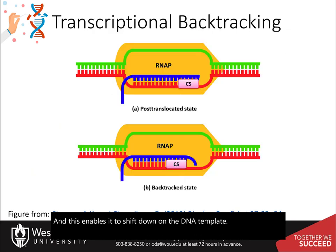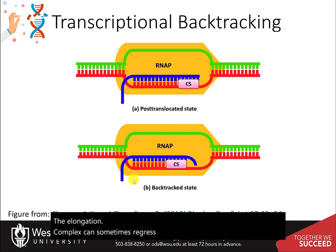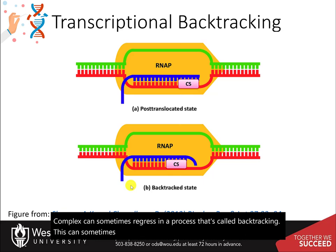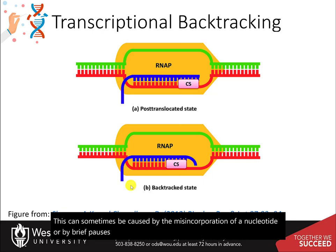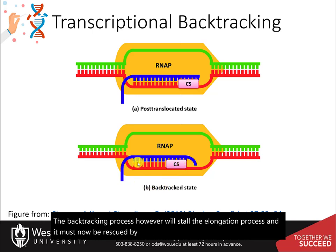Sometimes the elongation phase does not move smoothly in the forward direction. The elongation complex can sometimes regress in a process that is called backtracking. This can sometimes be caused by the misincorporation of a nucleotide or by brief pauses of the RNA polymerase complex. The backtracking process will stall the elongation process and it must now be rescued by an additional protein helper to continue the elongation mechanism.